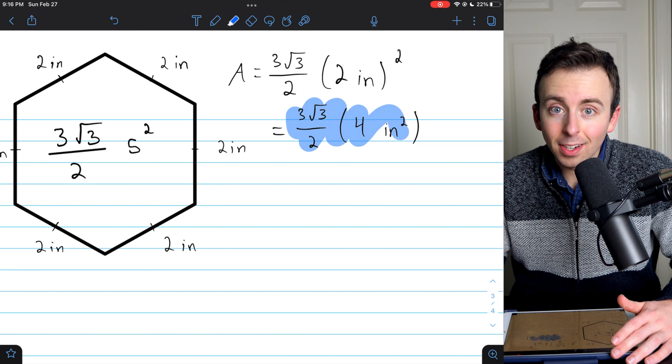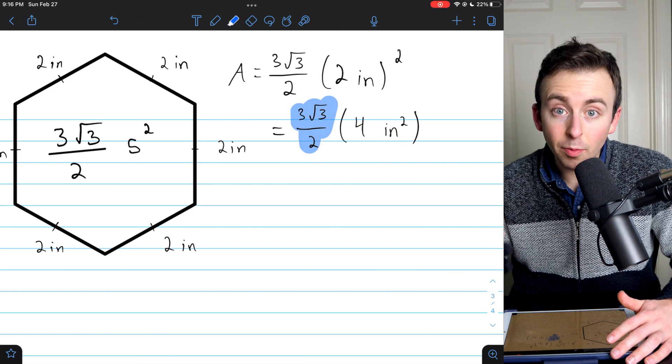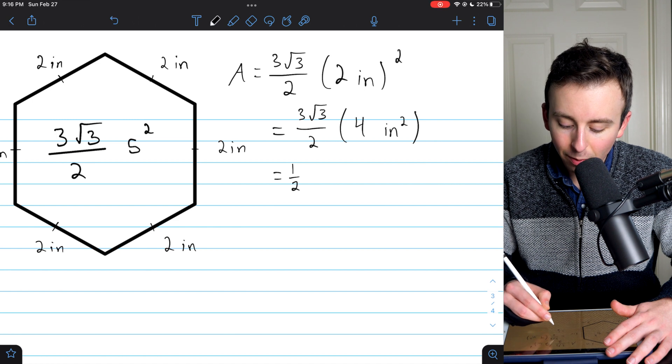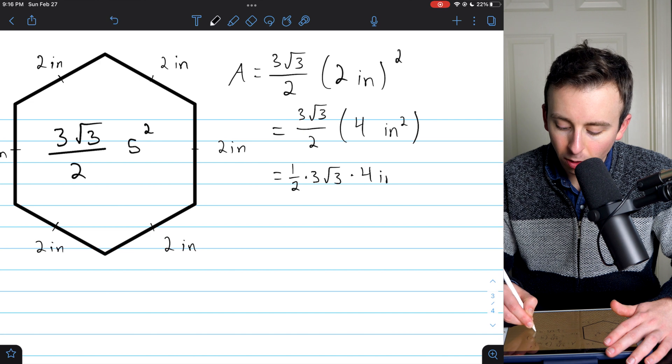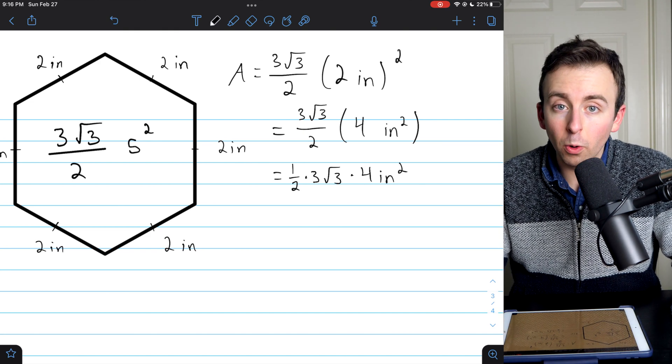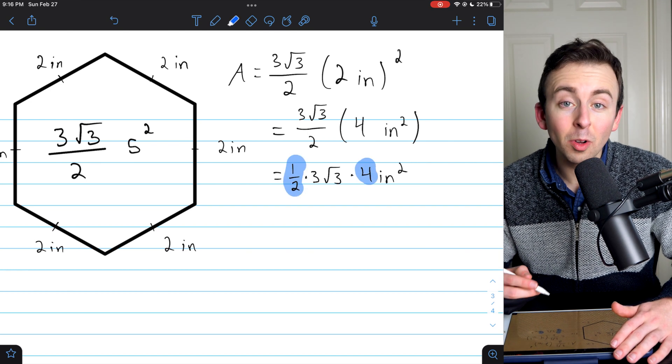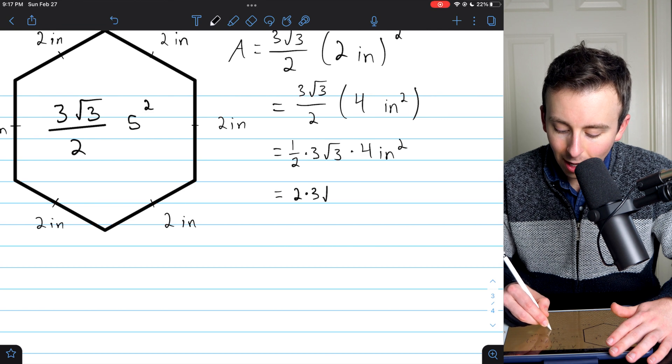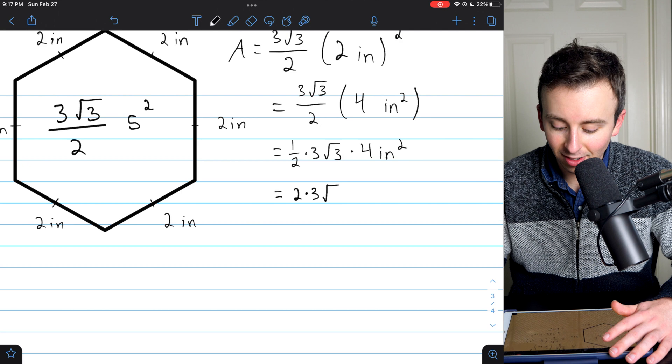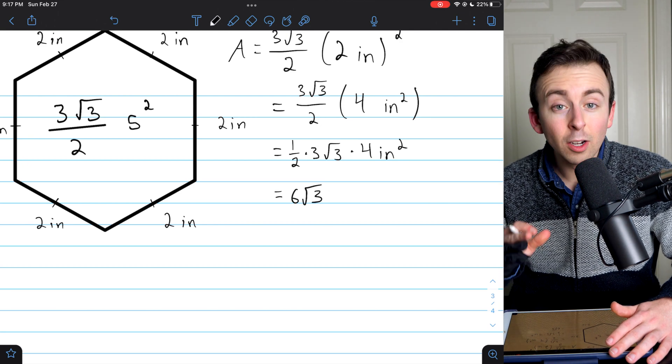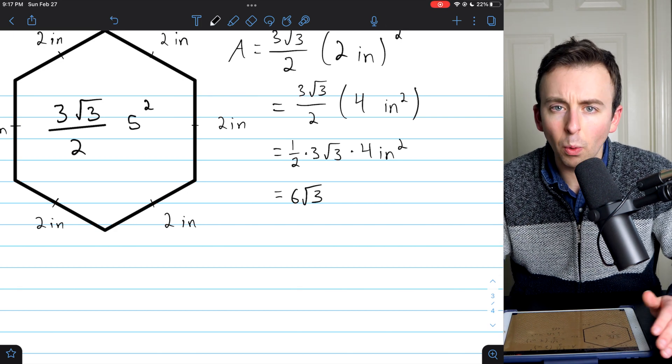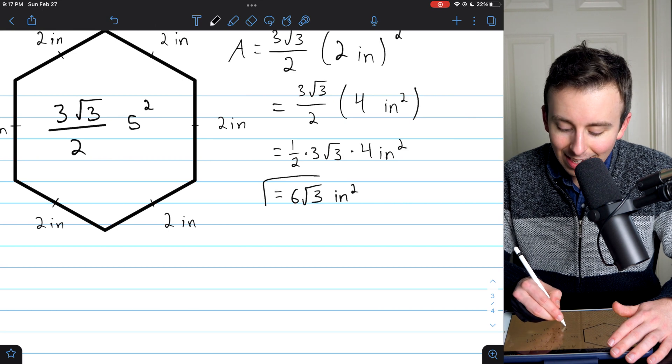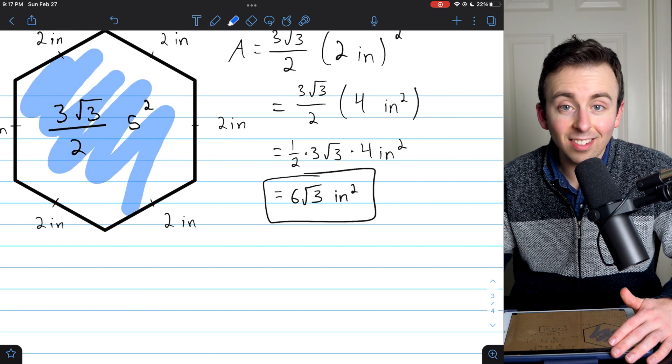You've got to remember that fractions mean division. Three root three over two means divide by two, and division is the same as multiplication. This is the same as one half times three root three times four inches squared. We can do multiplication in whatever order we please. Point is, we can take one half of four, and that's going to simplify this. One half of four is just two, so we're left with two times three root three, but two times three is just six. So that's six root three. Remember, multiplication is commutative. That's why I've been able to swap the order of these things around. So we've got six root three, and don't forget our units, inches squared. That is the area of our regular hexagon.